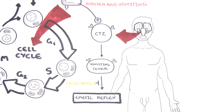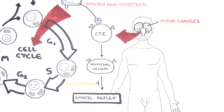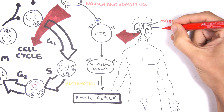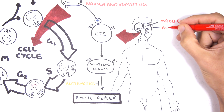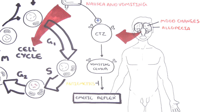Other acute side effects of chemotherapy drugs include problems in the brain such as mood changes, also known as chemo brain. Because chemotherapy drugs target cells with high turnover, they also target hair cells, which have a high turnover, resulting in alopecia — loss of hair.